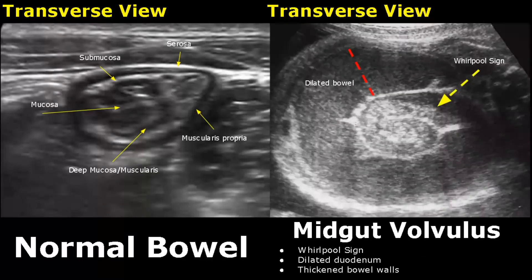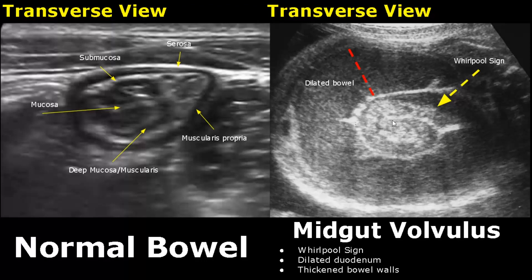Midgut volvulus occurs from malrotation of the bowel and can cause obstruction and ischemia. A whirlpool sign can be seen with dilated duodenum and thickened bowel walls.